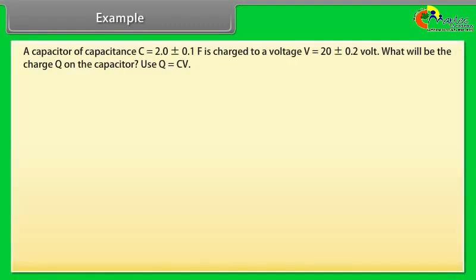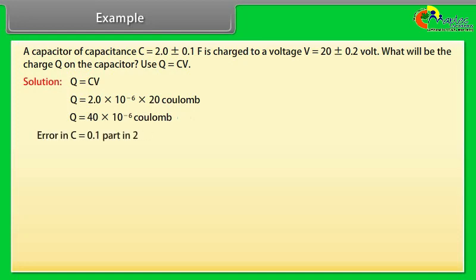Example: let's take an example of errors. A capacitor of capacitance C is equal to 2.0 plus minus 0.1 microfarad is charged to a voltage V equal to 20 plus minus 0.2 volt. What will be the charge Q on the capacitor? Use Q equals CV. Let us see the solution. Q equals CV. On calculating we get Q equal to 40 into 10 to the power minus 6 coulomb.